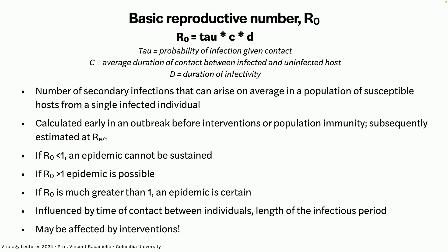Another number is the basic reproductive number R0 — the number of people that an infected person can infect on average in a susceptible population. This is usually calculated at the beginning of an outbreak before antivirals, vaccines, or population immunity exist. The formula includes tau (probability of infection), C (average duration of contact), and D (how long you are shedding virus). As an epidemic continues, R0 gets tainted by immunity, masking, and isolation.